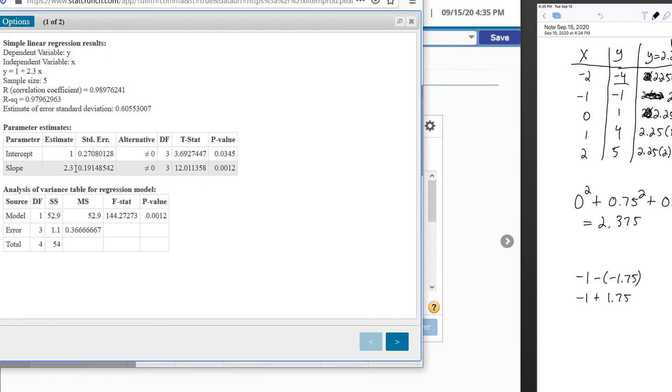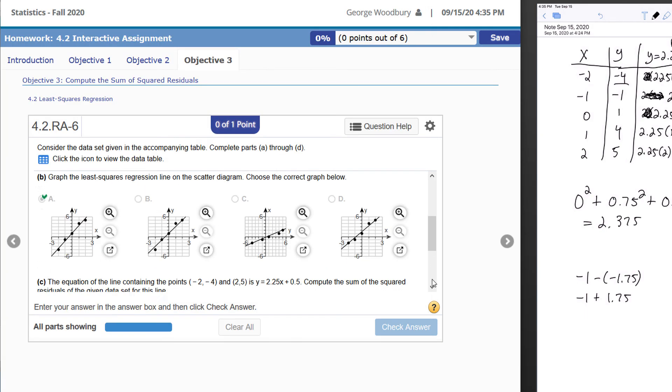This value right here where it says SS for error, this 1.1, that is the sum of the squared residuals. So again, that's inside the output for the simple regression. I go to the second table which says Analysis of Variance above it, and under the column that says SS, it's the value in the row called Error. We could have done the same thing that we did on the iPad, but this seems pretty straightforward and simple to me. I'm just going to come back and type that number in: 1.1.